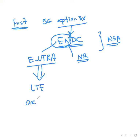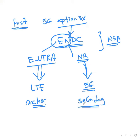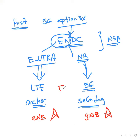This is called NSA, or Non-Standalone deployment, where an LTE anchor is required to exchange control and signaling information. LTE here is the anchoring node, and it is also required to configure the NR radio access network as a secondary node. In this setup, the LTE base station eNodeB takes on the role of the Master Cell Group, while the 5G base station gNodeB becomes the Secondary Cell Group. Both radio access networks are connected to the existing LTE core network, the EPC.